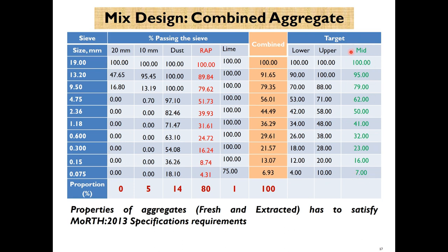The target grading is specified for a bitumen concrete layer. The RAP material grading does not suit directly the target grading, so we need to mix virgin aggregates. Three aggregates are taken: 20 mm, 10 mm, dust, and lime. After blending, we find we need to mix 5 percent of 10 mm aggregate, 40 percent of dust, 1 percent of lime, and 80 percent of RAP. This gives 100 percent combined grading which falls within the lower and upper limits.